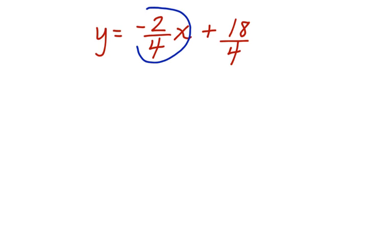y is equal to negative 2 fourths x plus 18 divided by 4. This part of the equation we can easily simplify. y equals negative 1 half x. Now we can also work with this side. 4 goes into 18 4.5 times.